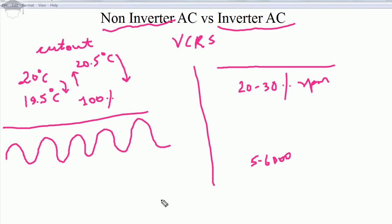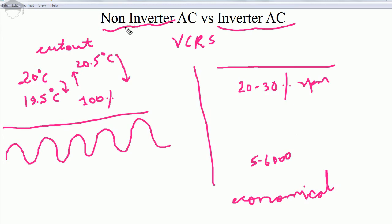However, when we consider a period of time — say two years — after adding maintenance cost and electricity cost, we find that inverter AC is much cheaper and more economical overall. The capital cost of inverter AC is more, but the running cost and maintenance cost are quite less compared to non-inverter AC. Inverter AC is also much more silent in operation, and we feel a constant temperature in the room, whereas non-inverter AC causes fluctuating temperature and does not achieve 100 percent comfort.